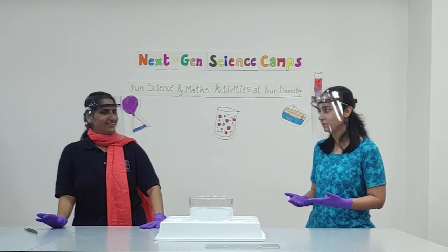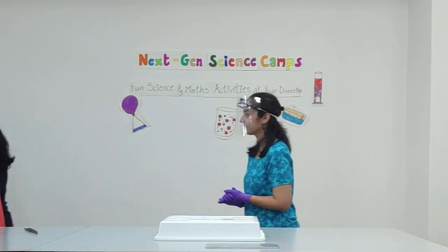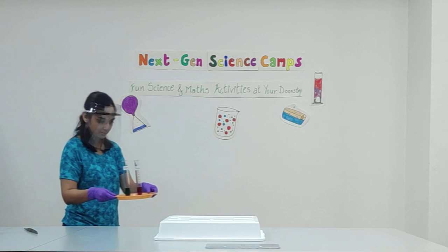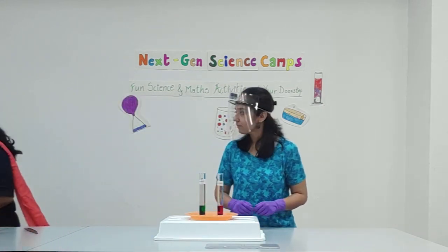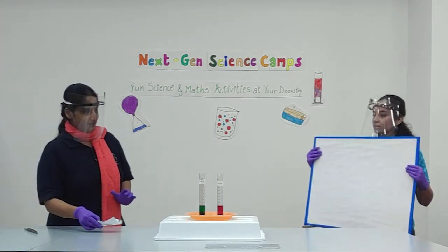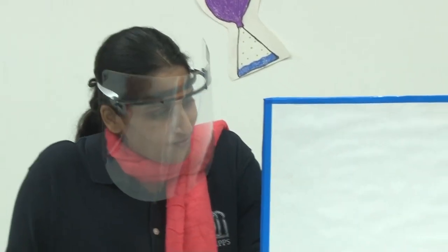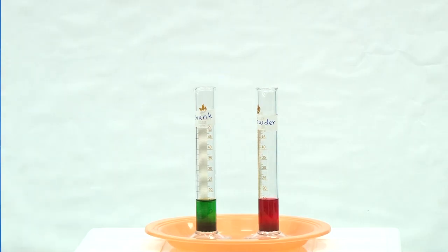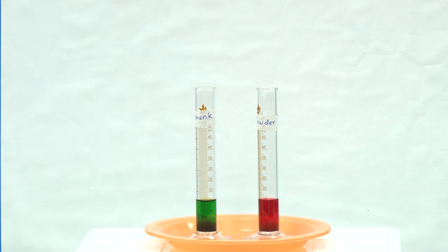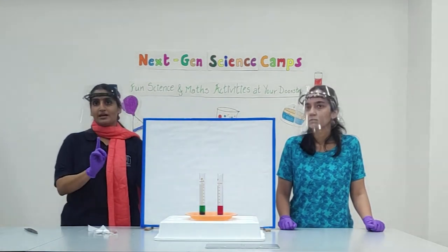What do you mean by changing conditions? Let's start, I'll show you one. Now we are all set for our first demo. In this one, what we are going to do is take the same amount of vinegar. Don't be confused with the colors because we have just added food colors to make it colorful. In this same amount of vinegar, we are going to add the same amount of baking soda.